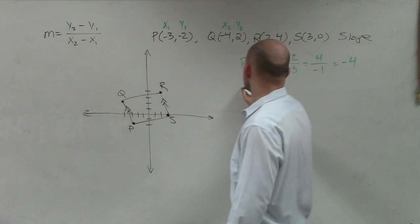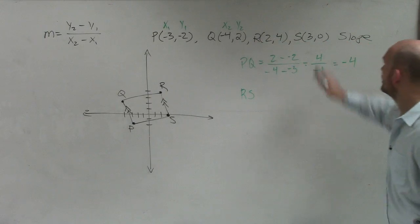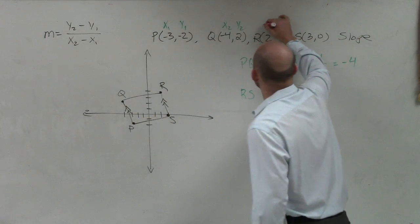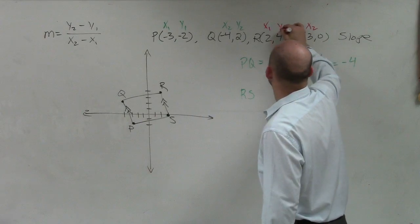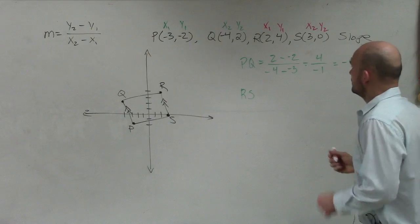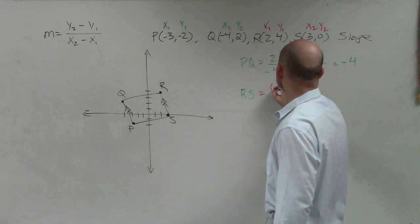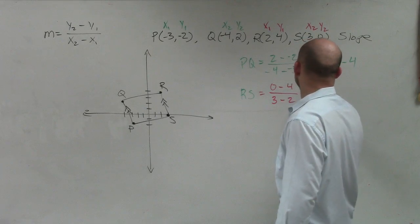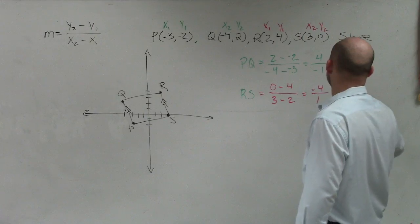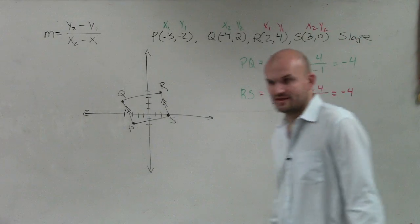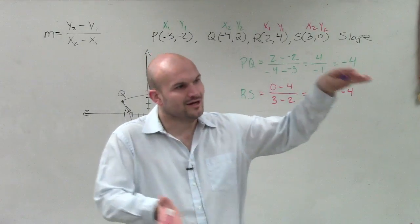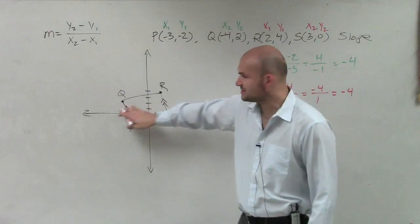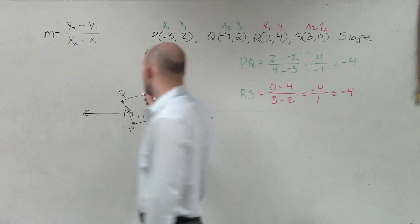Then I do RS. Between R and S, I'll relabel these points x1, x2, y1, y2. For RS, I have 0 minus 4 over 3 minus 2, which is negative 4 over 1, which equals negative 4. So are those parallel to each other? They have the same slope. Remember when you learned about parallel lines? As long as they have the same slope, they're never going to touch. So now we confirmed these are parallel.